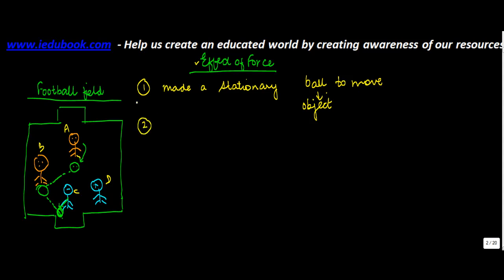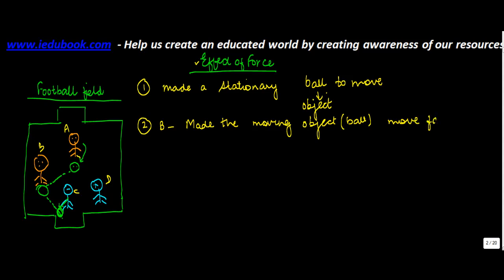The second force was applied when B, while the ball was moving, kicked the ball again. What did it do? It made the moving object, which is the ball, move faster. Let's say when A had kicked the ball, it was moving at 10 kilometers per hour. When B hit it, it increased the speed to 15 kilometers per hour. So the second impact of force is that it can make a moving object move faster.